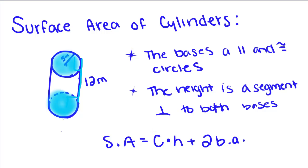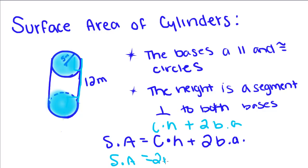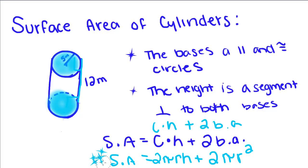To find the surface area of a cylinder, we take circumference times height plus two times the base area of these circles. We can write this a different way by filling in some things. Circumference is equal to two pi r, so two pi r times h would be two pi r h, plus two times the area of one circle. The area of one circle is pi r squared. So our final formula for surface area is two pi r h plus two pi r squared.